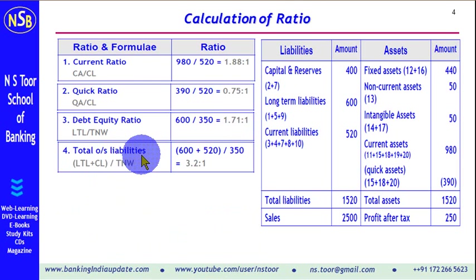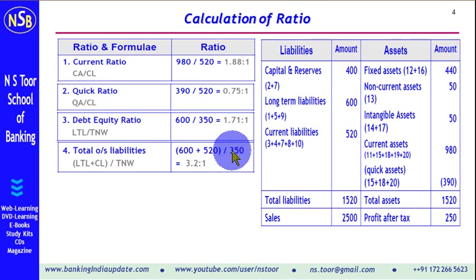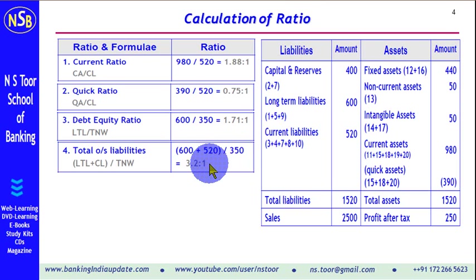The total outside liability ratio is also part of the leverage ratios. The formula is long-term liability plus current liability, divided by tangible net worth. Substituting the values gives a ratio of 3.2:1. There is no benchmark for this ratio.